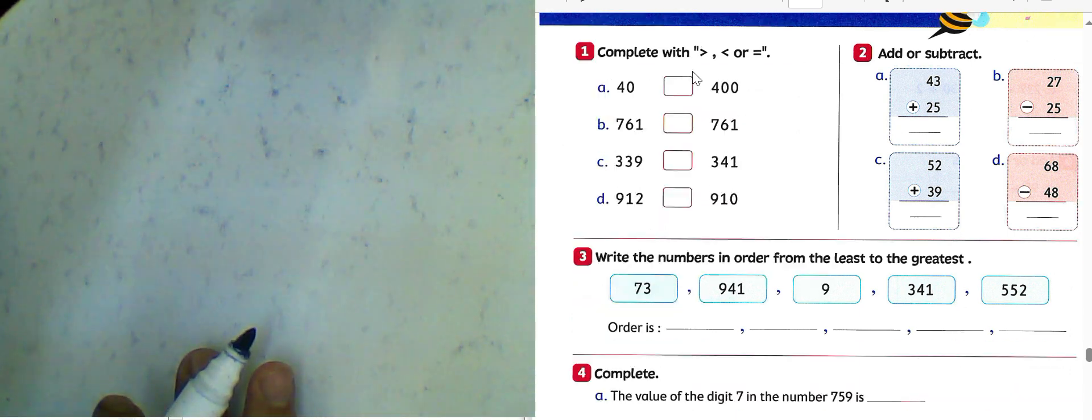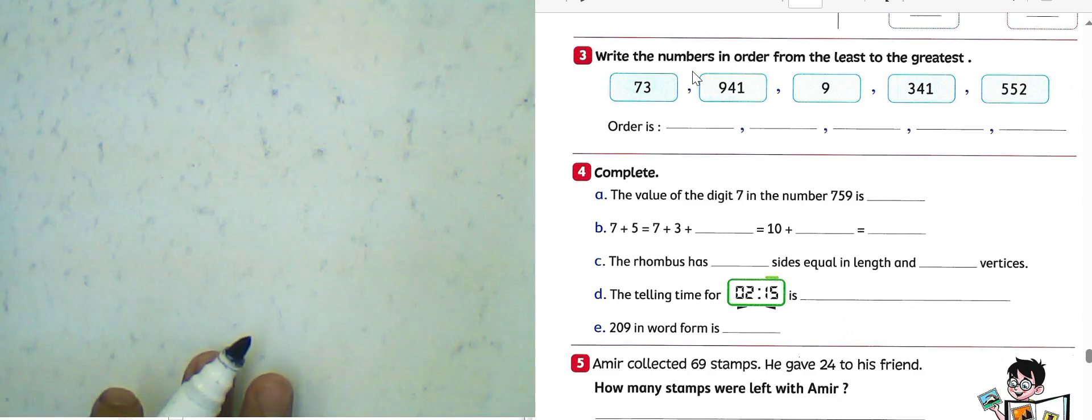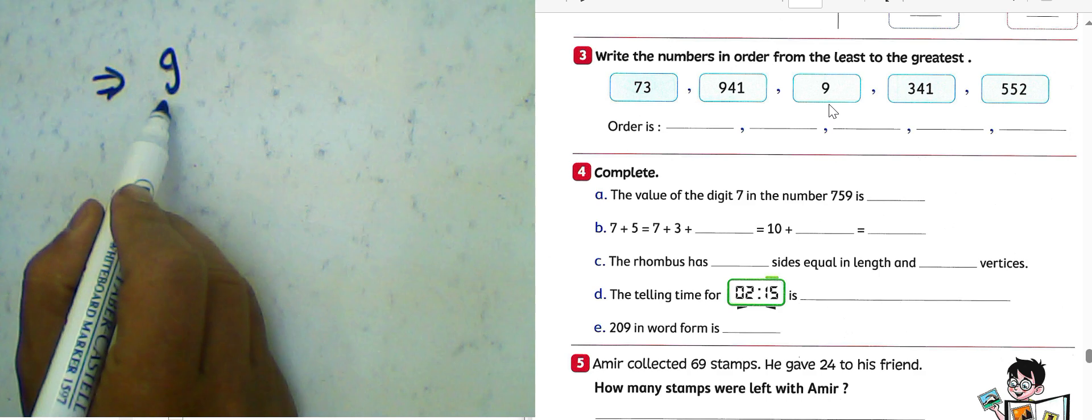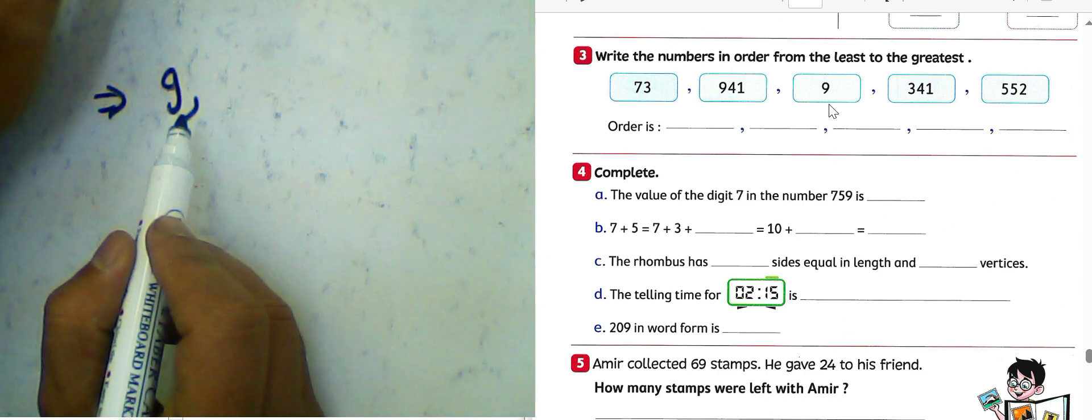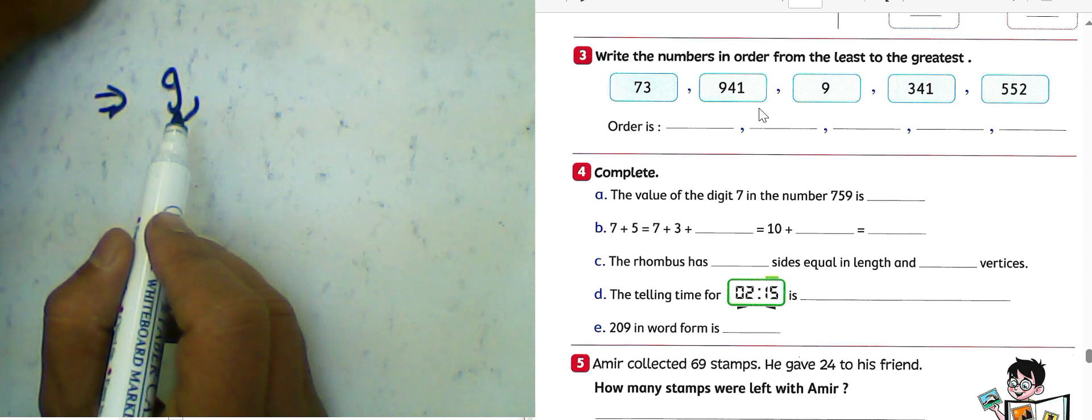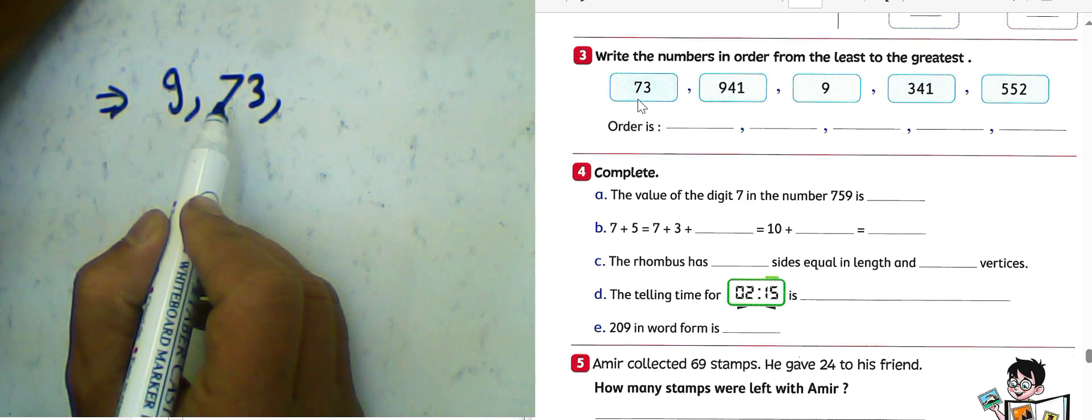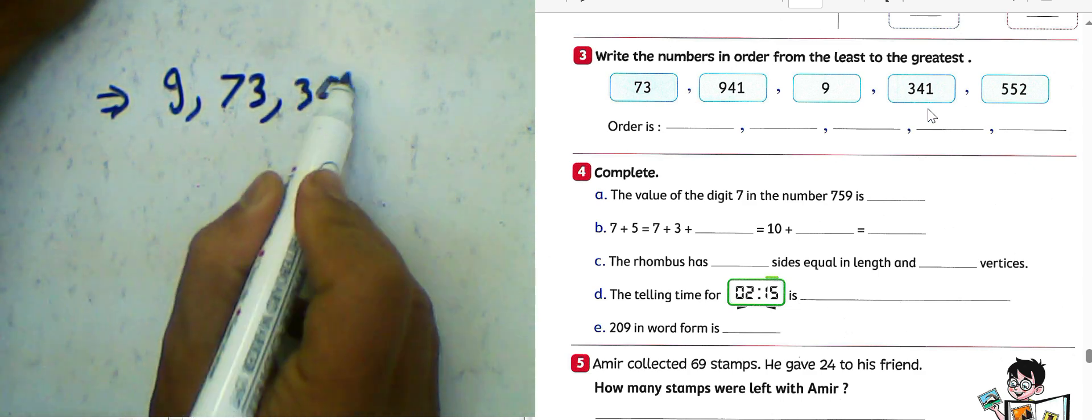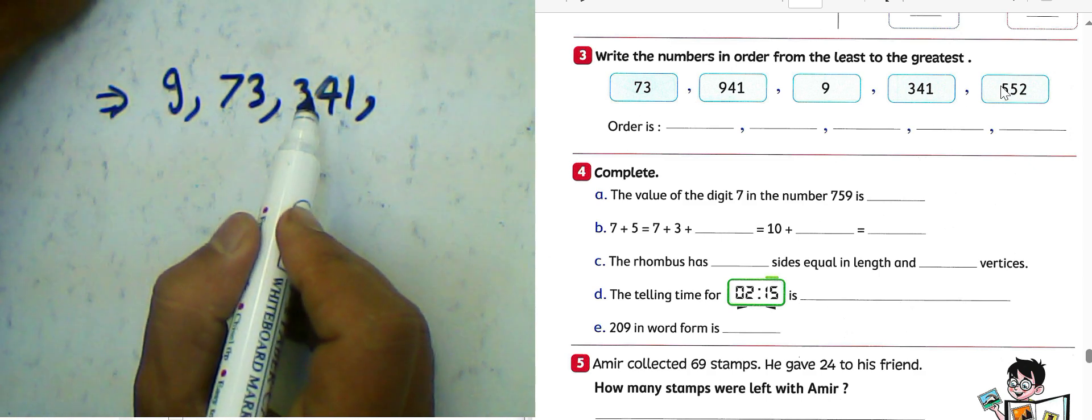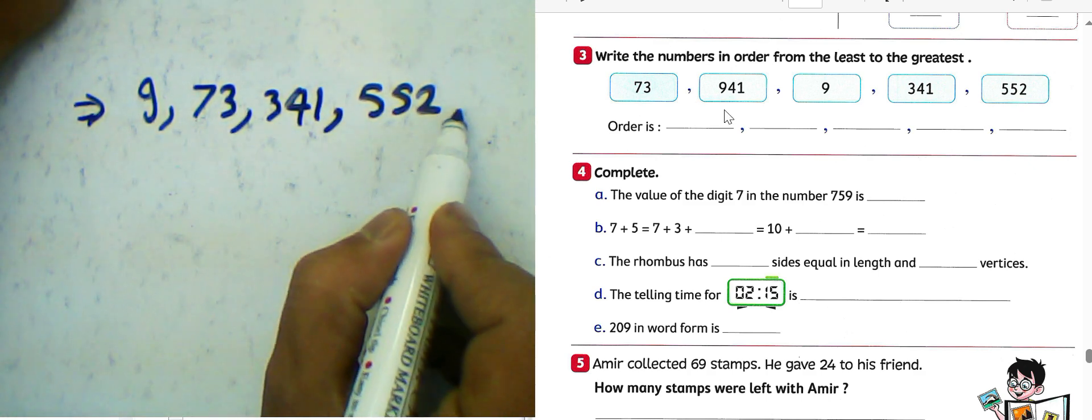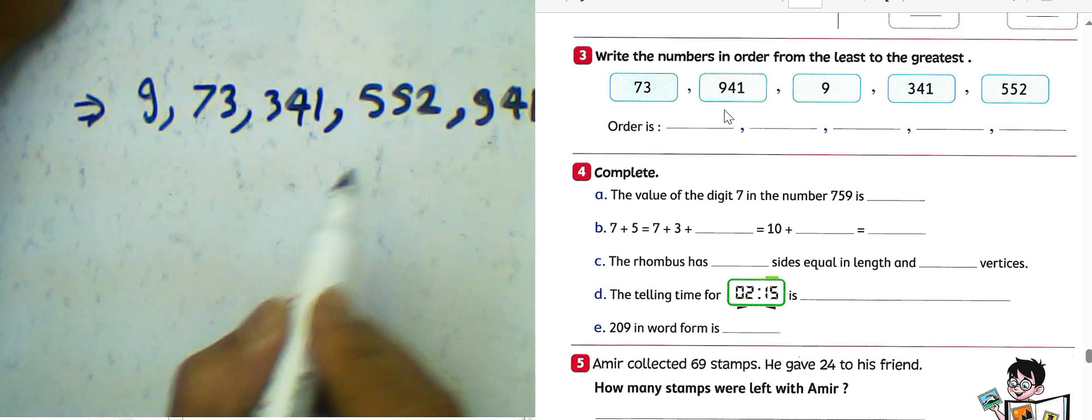Question number 3: Write the numbers in order from least to greatest. First step, we must count the digits. We have here 9 only, then 9 is the smaller digits. And then we have 73, 941, 341, 552. So the number comes here: we must write 73, and we have 341, and we have 552, and the last one it will be 941.